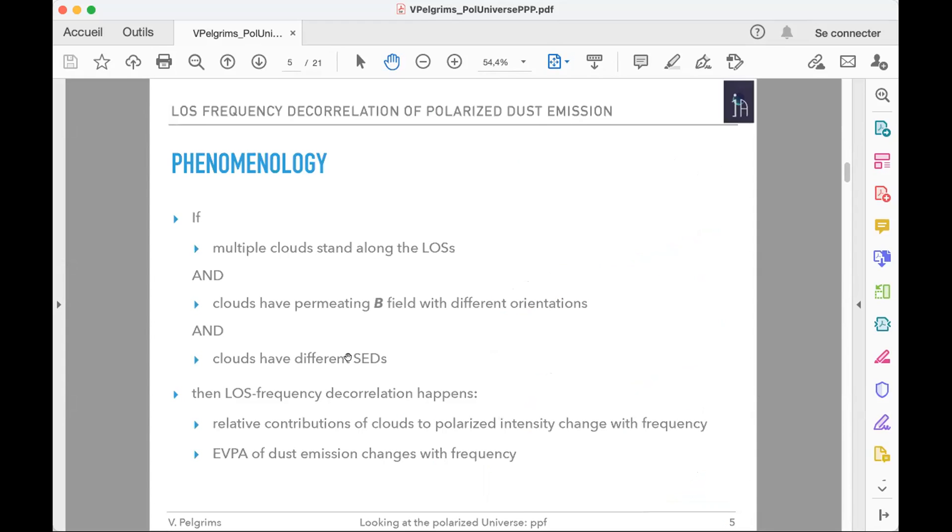In short, the phenomenology of line-of-sight frequency decorrelation goes as follows. If we have more than one cloud along the line of sight and those clouds are permeated by magnetic fields with different orientations and the clouds have different SEDs, then we have what we call line-of-sight frequency decorrelation, which is the fact that the relative contribution of the clouds to polarizing intensity changes with frequencies, which induces that the EVPA of the dust emission changes with frequencies.